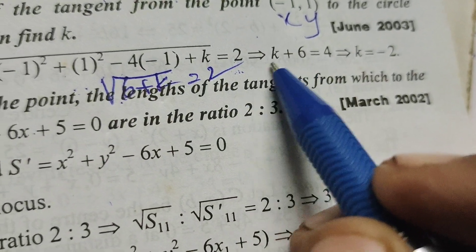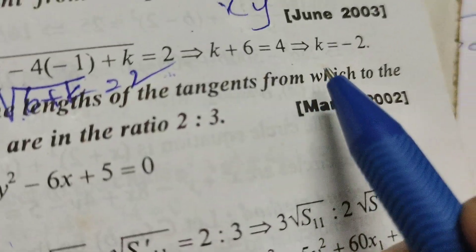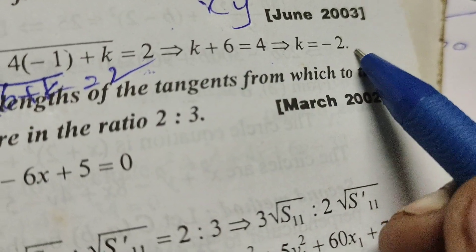6 plus k or k plus 6, 2 square means 4. Now, we want a k value. k equals to 4 minus 6, that is minus 2.